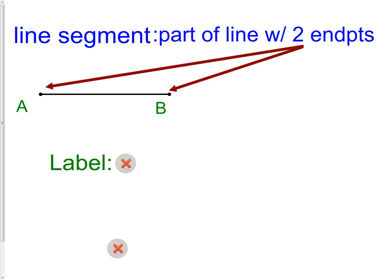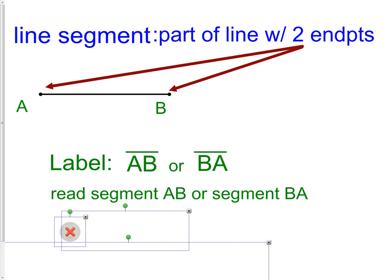Similarly to a line, a line segment has a label. It is the segment, or the line without the arrows on it, over the two letters of the line segment. So, for this one, it would be AB or you could use BA. Remember, with lines and line segments, the order of the letters is not important. We would read this as segment AB or segment BA.